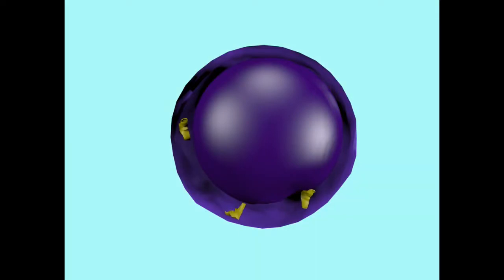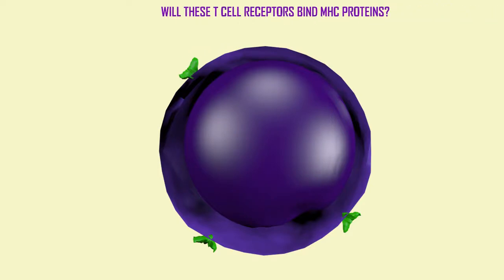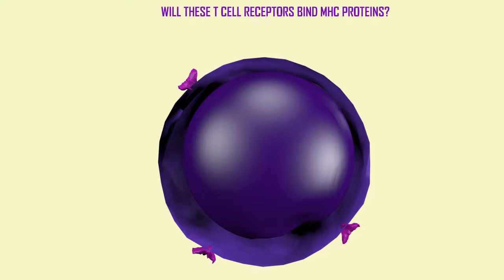As the precursors of T-cells are developing in the bone marrow, they shuffle the components of the genes for their T-cell receptors. They do this at random to create millions of different types of T-cell receptors. But are all of these effective? Will they interact with MHC proteins as they must? Might they react negatively against cells? Since they were generated at random, the possibility that they will not react appropriately needs to be taken care of.